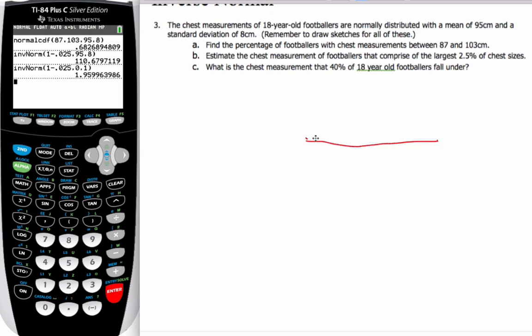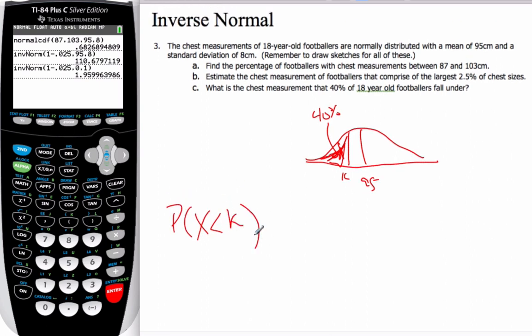I'm looking for some value K. So, the probability that X is less than K is equal to 0.4. And so, again, I'm going to go inverse normal.